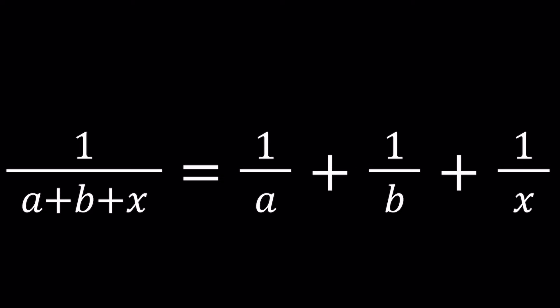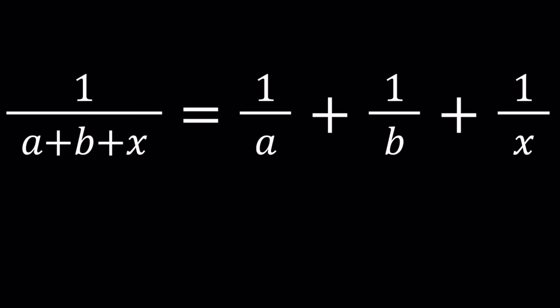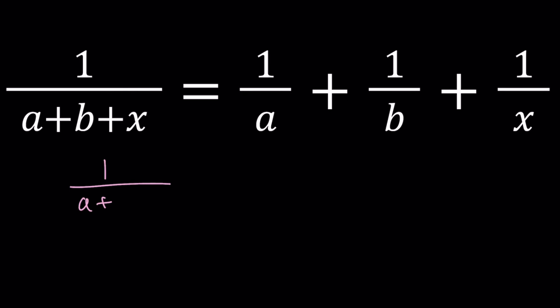Let's go ahead and start by making a common denominator. On the left hand side we have what we have. On the right hand side the common denominator is abx. So we gotta multiply by bx and then by ax and then by ab. All of that is divided by abx. Obviously we do need some requirements like a plus b plus x should not be 0. So x cannot equal negative a minus b, and obviously x should not be 0 either. Other than that everything looks good.